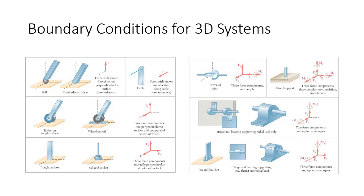The 3D boundary conditions might seem kind of complicated, but it really isn't. It's just an extension of what we had defined for two-dimensional cases. All you need to do is look at the problem you're assessing and say, I'm dealing with a ball and socket joint, which is basically a pin boundary condition. If it's a pin boundary condition, I'm going to have three unknowns: a force in the X direction, a force in the Y direction, and an unknown force in the Z direction.